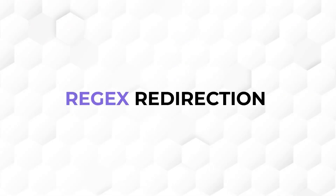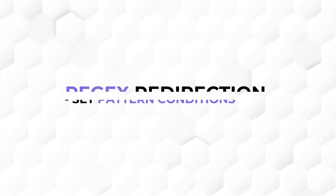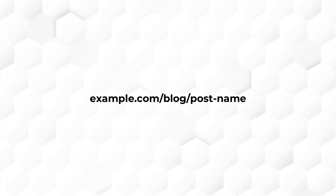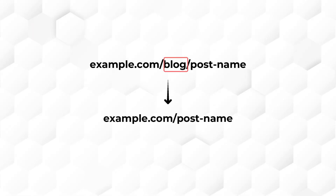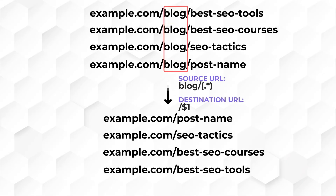Regex allows you to create a set of conditions for redirection. For example, you can set a rule to redirect any URL containing a specific block to a new URL without that parameter using a pattern, and all URLs matching this pattern will be redirected accordingly. I know it sounds a little complicated, but by the end of this video, I'm pretty sure you'll be confident with using Regex to redirect your URLs.